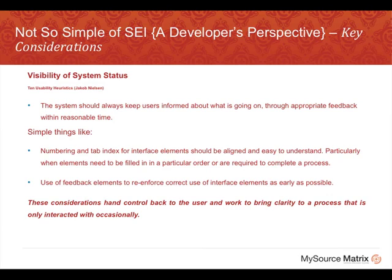The key considerations — I've borrowed heavily from the 10 usability heuristics developed by Jakob Nielsen, which I've always found to be an excellent starting point. Firstly, visibility of system status: the system should always provide feedback to users on where they're at and what they're doing. Simple things like numbering and tab index for interface elements should be aligned and easy to understand, particularly when elements need to be filled in a particular order. Use feedback elements to reinforce correct use of interface elements as early as possible. These considerations hand back control to the user and bring clarity to a process that is only interacted with occasionally.